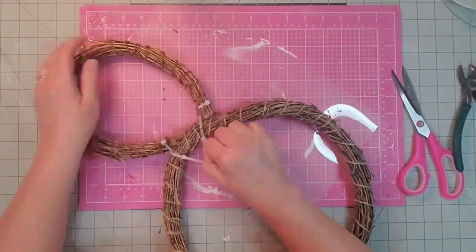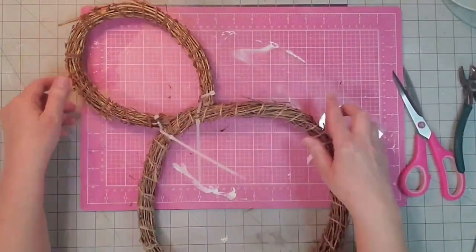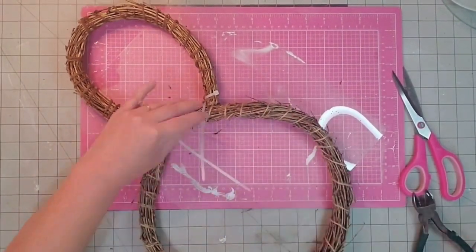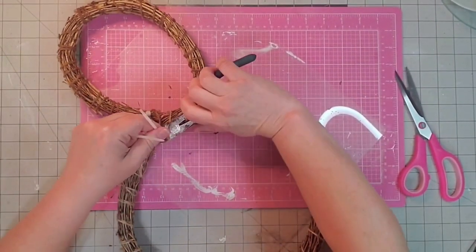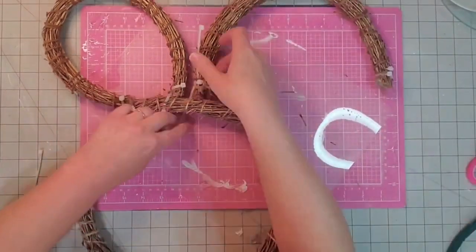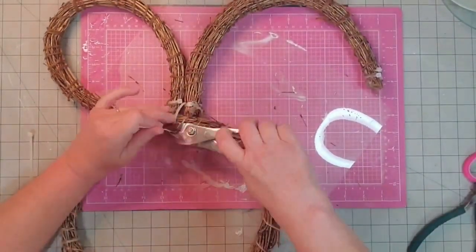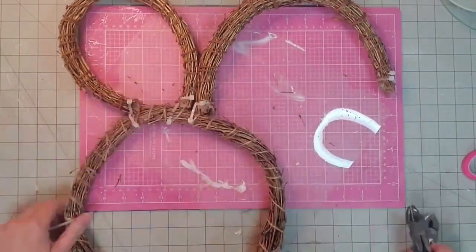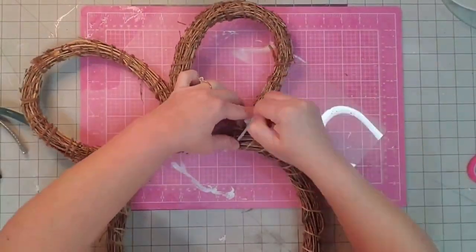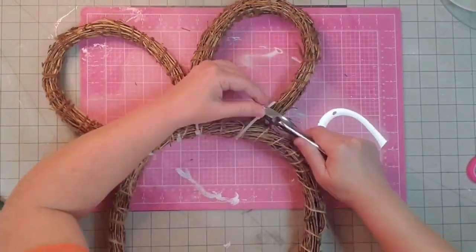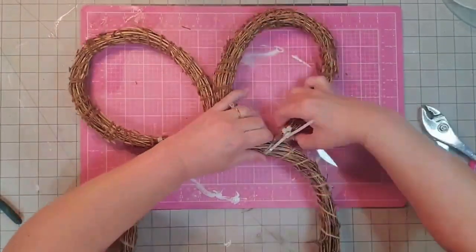I am turning them into bunny ears. I just pull them as tight as I can and use my pliers to make sure they're really tight and then cut off the excess with my wire cutters. And here I am doing the second bunny ear. It did take a little muscle but it wasn't that hard.